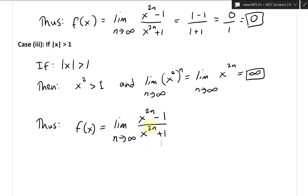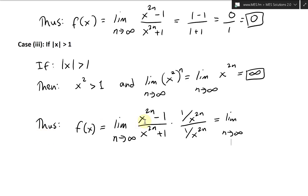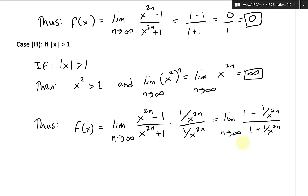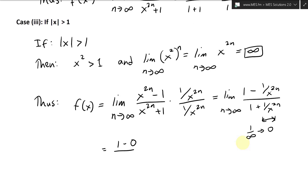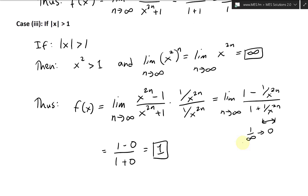Since we're dealing with infinity over infinity, we multiply the top and bottom by 1 over x to the 2n. This gives the limit as n approaches infinity of 1 minus 1 over x to the 2n, divided by 1 plus 1 over x to the 2n. As n approaches infinity, 1 over x to the 2n goes to 0, so this equals 1 minus 0 over 1 plus 0, which equals 1.